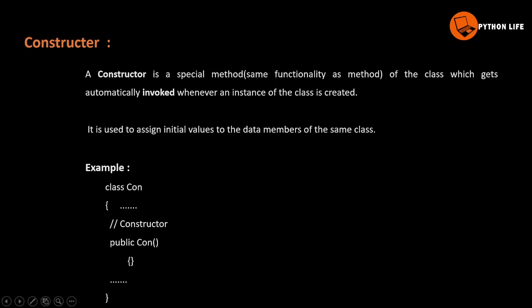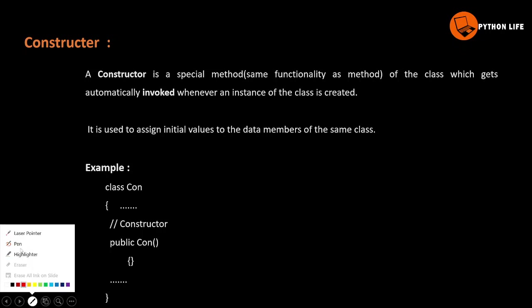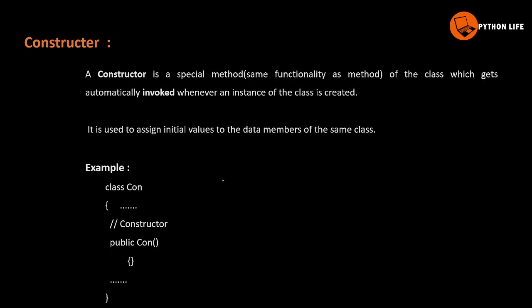A constructor is the special method of the class which gets automatically invoked whenever an instance of the class is created. Instance is object. It is used to assign initial values to the data members of the same class.